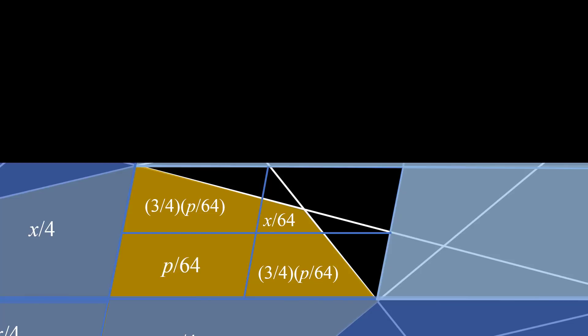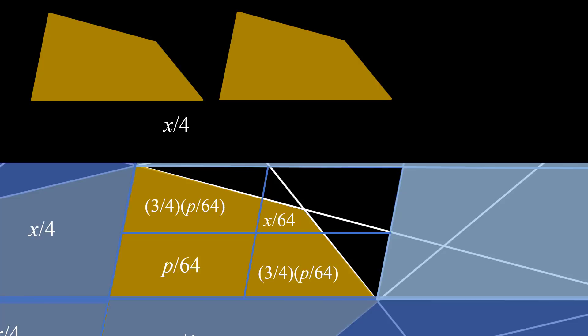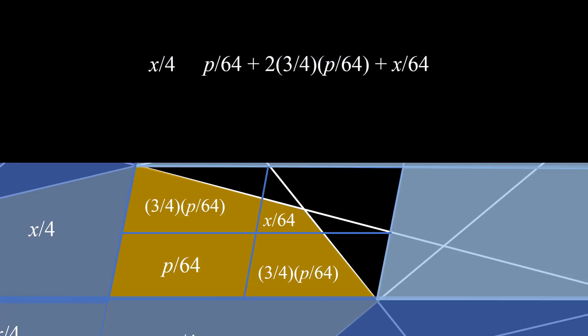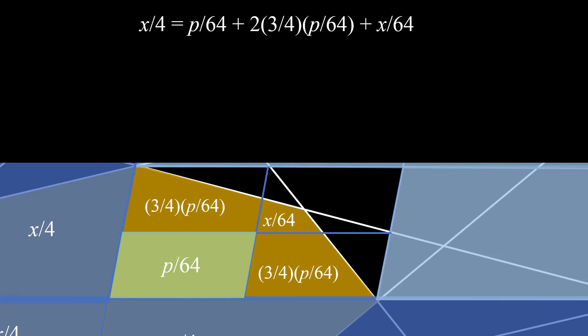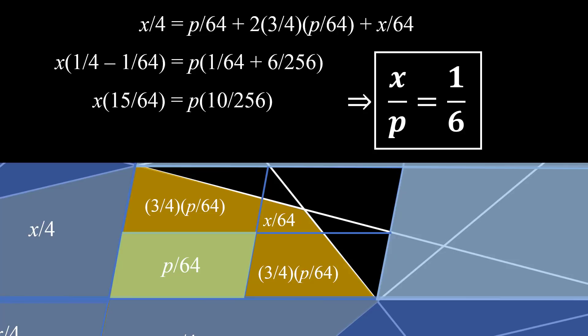We're now ready to solve the problem. We have one expression for the area of 1 quarter of the octagon as x over 4. We've also found another expression: the sum of p over 64, plus 2 times the area of a trapezoid (which is 3 fourths times p over 64), plus x over 64. Setting these two expressions equal, we bring the x terms to the left and p terms to the right, simplify, and divide through to get that the ratio x over p equals 1 sixth. And that's our answer.